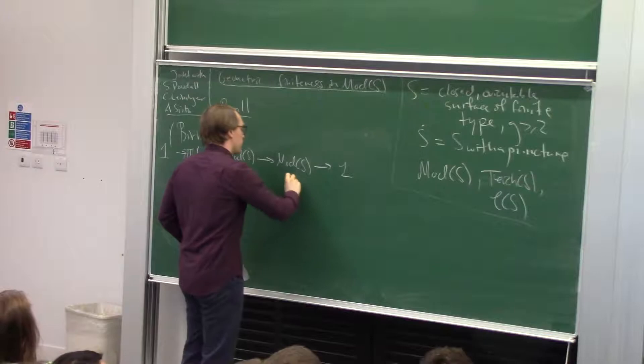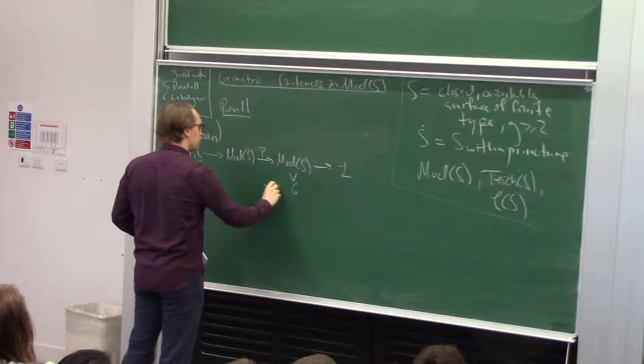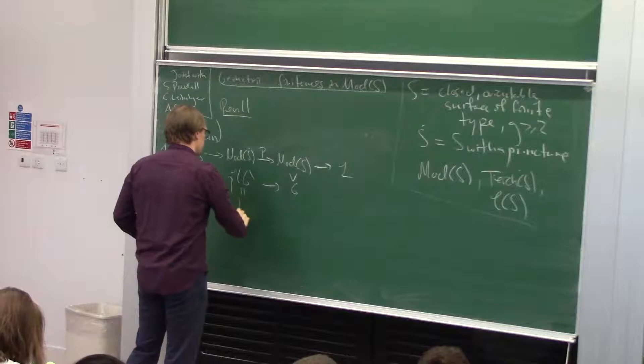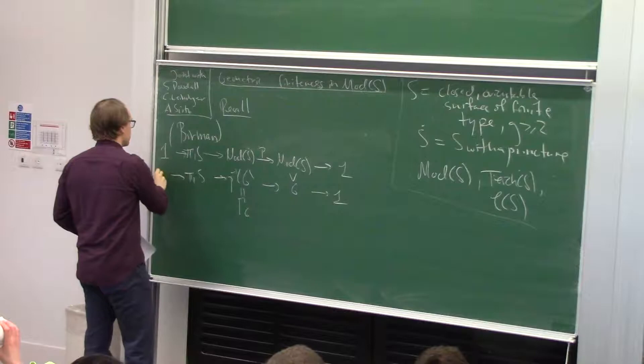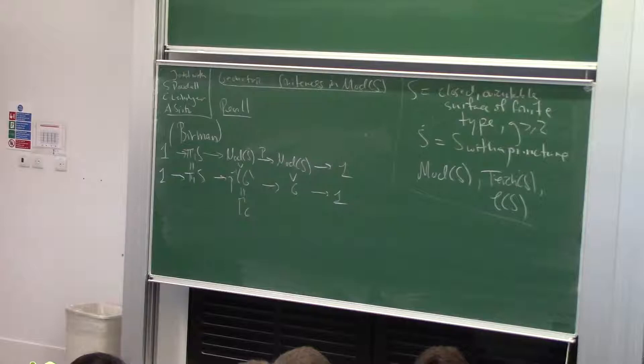I'm going to prove that this is precisely the kernel of that map. If I take a subgroup of the mapping class group, then under this projection I can pull back, and this will give me some surface group extension — the kernel is going to be the fundamental group of the surface.